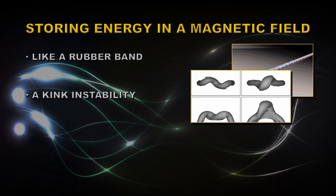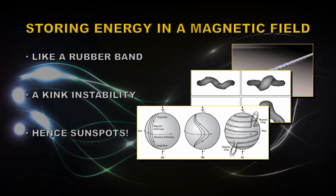But if you over twist it, the rubber band will kink. It's called a kink instability, and that kink is very important to the Sun because that makes the twisted magnetic fields beneath the surface of the Sun pop through the surface of the Sun and that creates sunspots. Sunspots are merely places where the strong magnetic field from below the surface of the Sun is poking through the surface of the Sun.